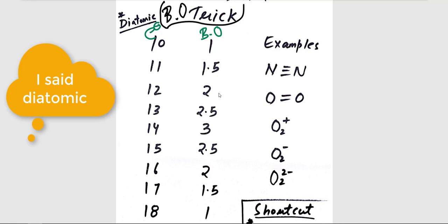For diatomic species like N2, O2, etc., all you have to do is know how to calculate the total number of electrons. For example, in N2, the total number of electrons are 14 because 7 are from N and 7 are from another N.